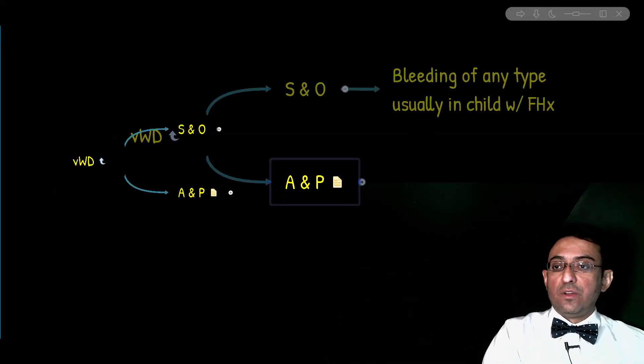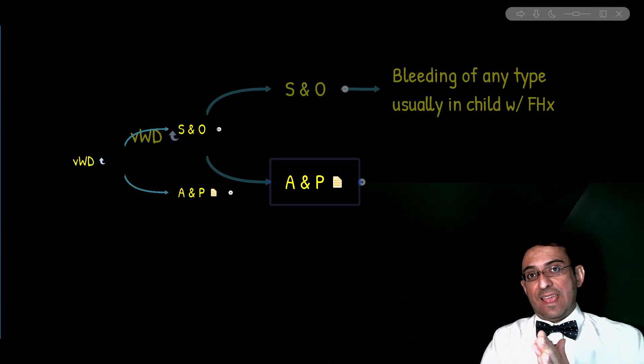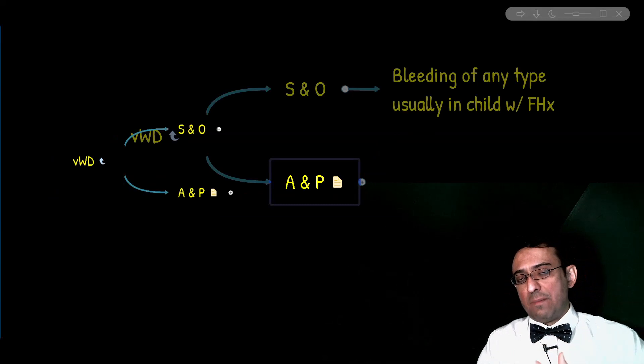In regard to diagnosis, what are the initial bleeding workup in von Willebrand disease? We have the abnormality indicative of platelet dysfunction, and that's increased bleeding time. However, because the abnormal platelet aggregation is not due to thrombocytopenia, the platelet count is normal.